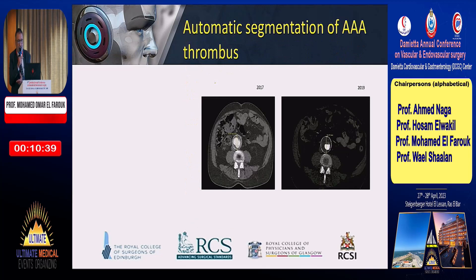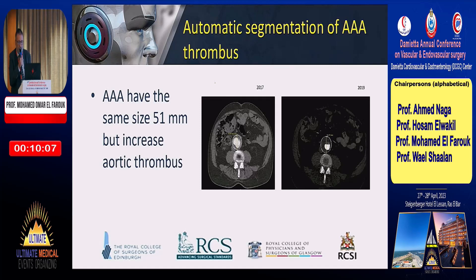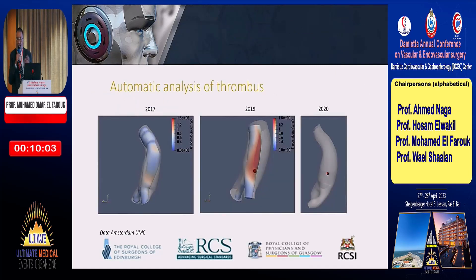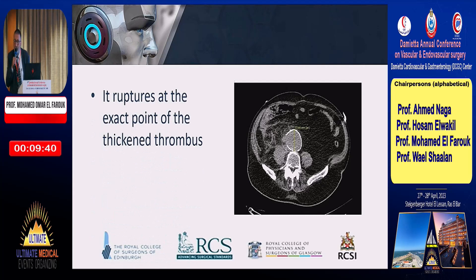This is a beautiful case because the program can predict rupture. They found that if you analyze the amount of thrombus inside the aorta and do aortic modeling of the thrombus, it will tell you if the aneurysm is going to rupture. This patient, from 2017 to 2019, the aneurysm had not changed its size — it was 51 millimeters. But the thrombus had increased. If you do automatic analysis with artificial intelligence on the thrombus, it will predict where the rupture will occur. This patient ruptured at the exact point predicted by artificial intelligence, confirmed six months later. So AI can definitely help you pre-operatively.